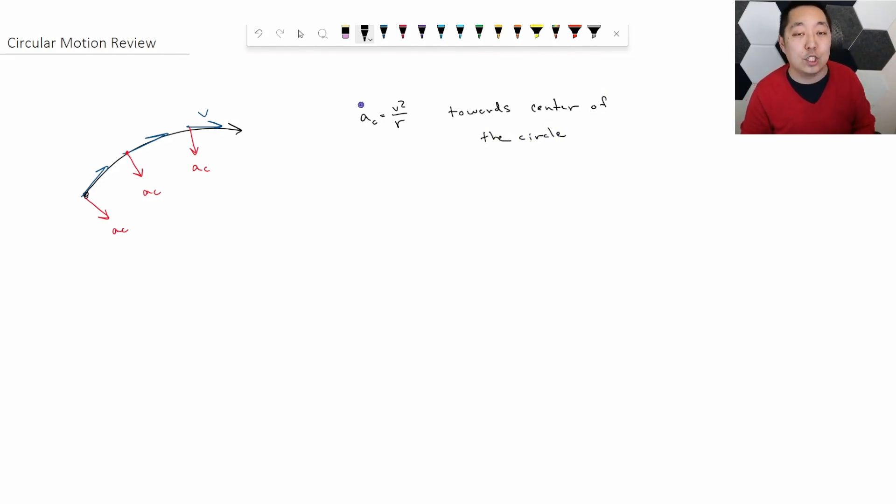This is the key thing to remember, though. There are no new forces in circular motion. If you go back to the lesson on how to draw a free body diagram, we do not draw the free body diagram any differently. The only thing we have to remember is if something is moving in a circular path, a curved path, there is an acceleration perpendicular to the velocity towards the center of the circle.